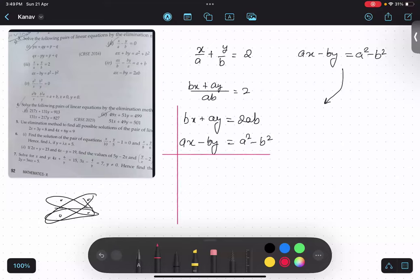So what should I multiply the first equation with? A. And second equation is B. Yes or no?